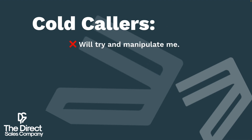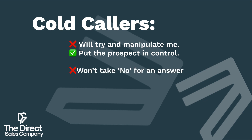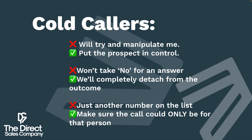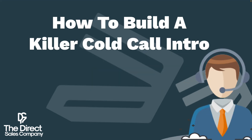So let's go back to it. Cold callers will try and manipulate me — we'll put the prospect in control. Cold callers won't take no for an answer — we will completely detach from the outcome. We're just another number on the list — we'll make sure the call could only be for the person we're calling. So how do you put that into practice and build a killer intro which will get you in contact with any prospect in any organization?